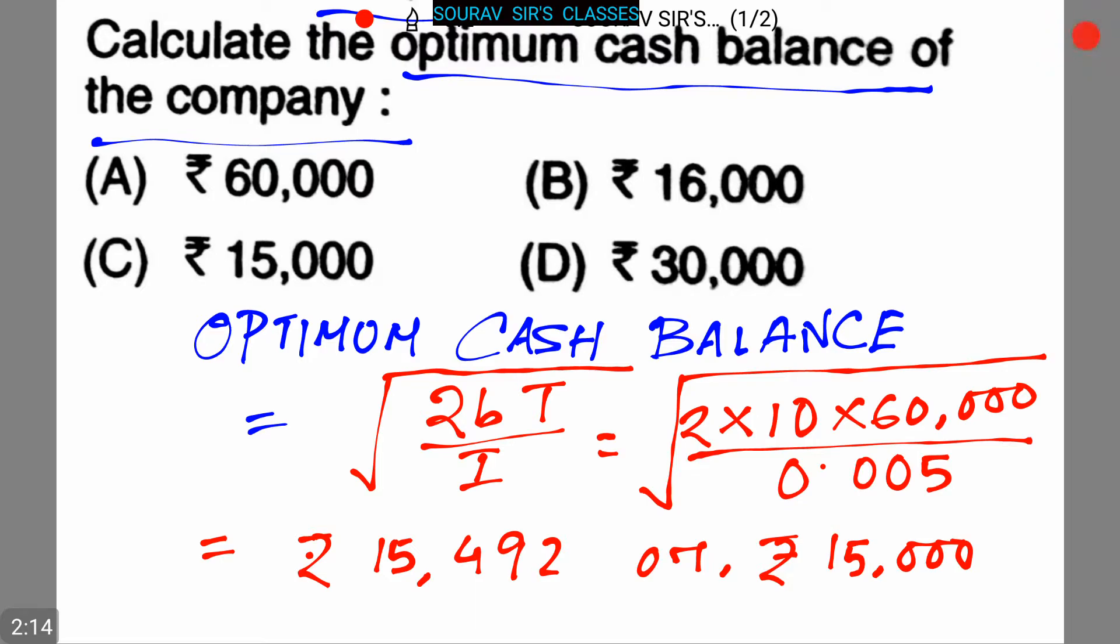This equals to rupees 15,492 or rupees 15,000. Here we can take I that was given in the question as 6% or 0.5% per month. The answer is 15,000, that is option C. So the optimum cash balance of the company is 15,000.